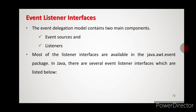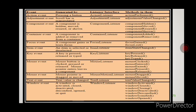Next we will see about event listener interfaces. As mentioned in the event delegation model, it contains two main components: event sources and listeners. When an event is generated, the event source must be registered with the corresponding event listeners. Most of the event listener interfaces are available in the java.awt.event package.